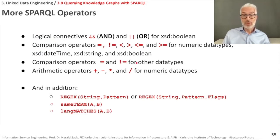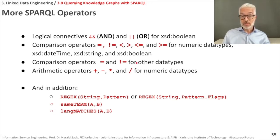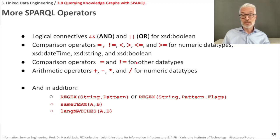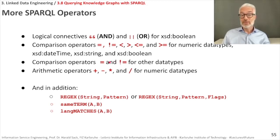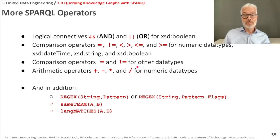Now let's make our SPARQL queries more complex using SPARQL operators. You can combine filter clauses and filter constraints with logical AND and logical OR for boolean data types. Comparison operators like equal, not equal, greater than, less than, greater or equal, and less or equal work for numeric types, date-time, strings, and booleans. You can also use arithmetic operators: addition, subtraction, multiplication, and division for numeric data types.